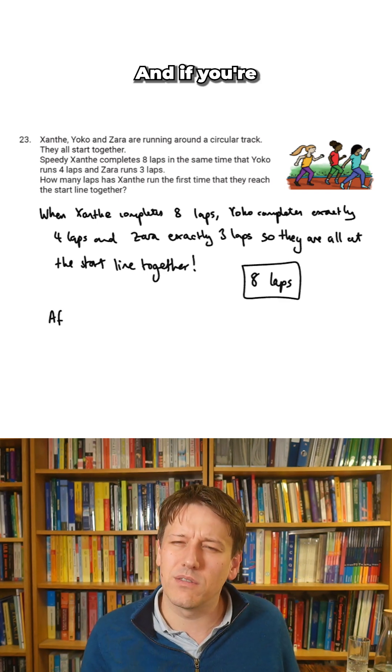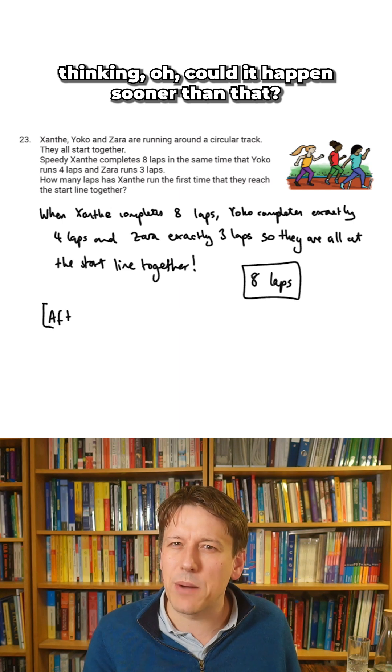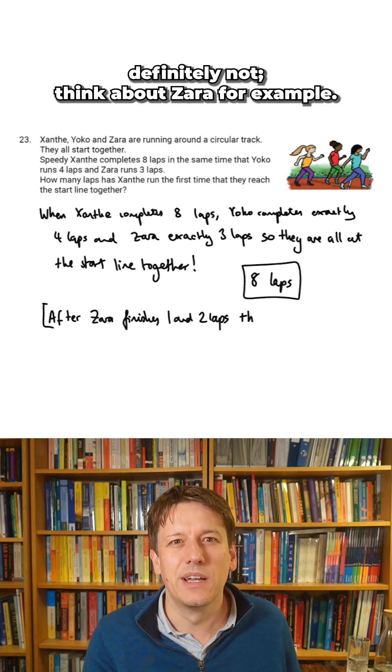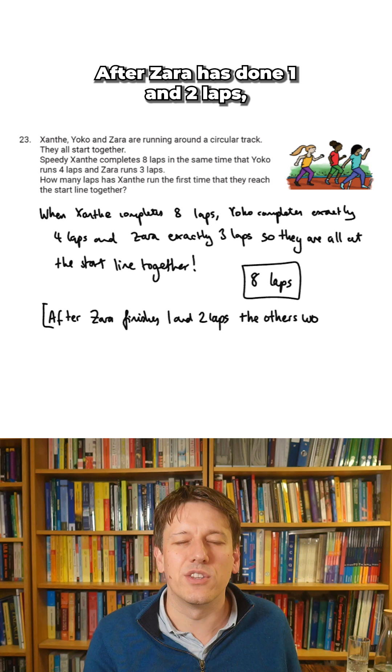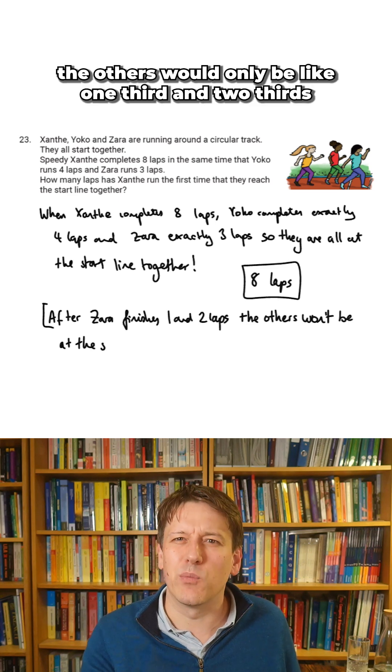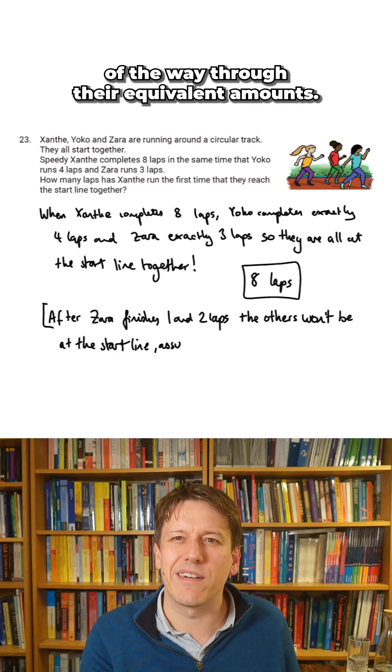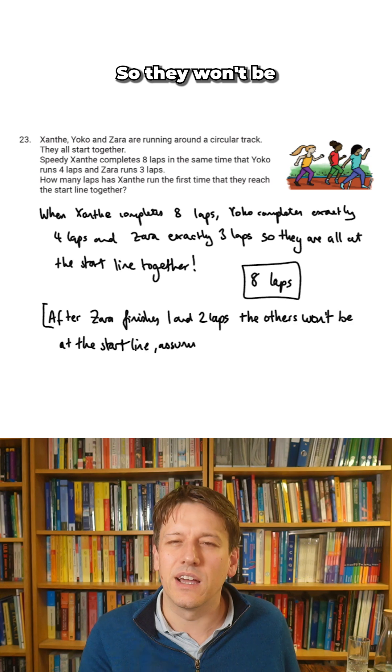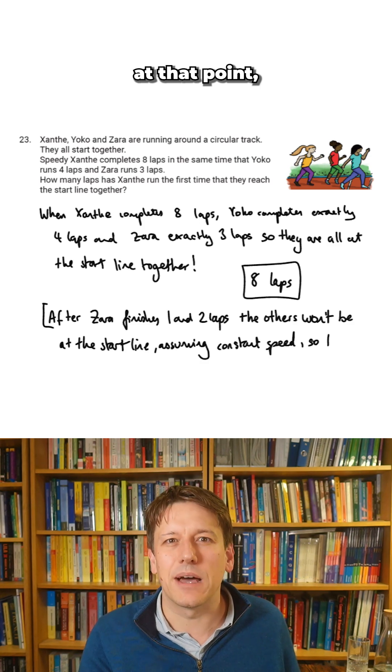And if you're thinking, could it happen sooner than that? Well, actually, definitely not. Think about Zara, for example. After Zara's done one and two laps, the others would only be like one third and two thirds of the way through their equivalent amounts. So they won't be at a whole number of laps at that point.